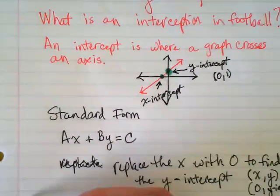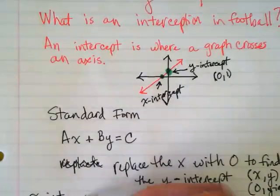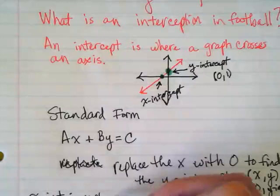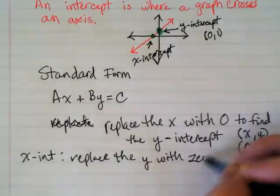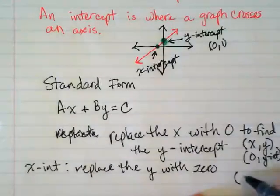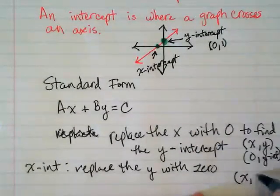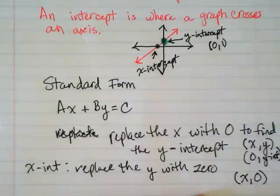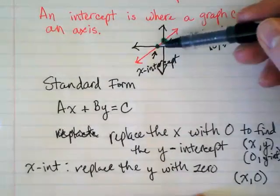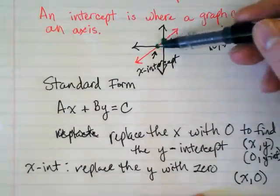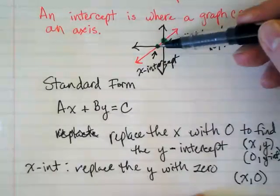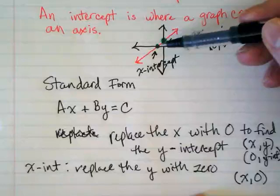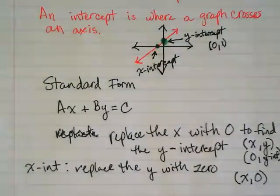If I do the opposite, if I want to find the x-intercept, I can replace the y with 0. And I will have an x-y pair where I have some number that is my x, and the y is 0. Because if it's on the axes, one of the coordinate pair numbers has to be 0. So when we have the equation, we can put a number in for that and find the opposite.